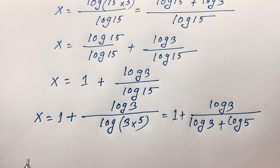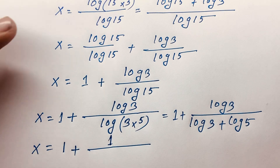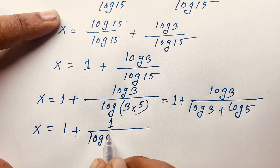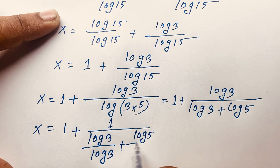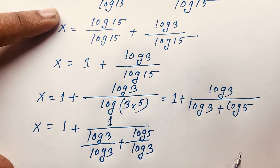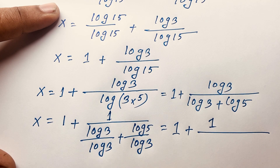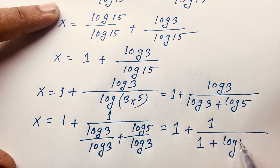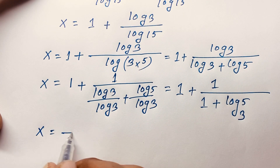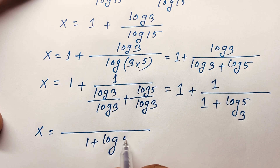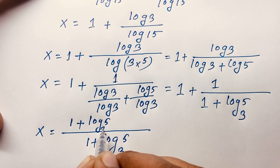So x equals 1 plus 1 over (log 3 over log 3 plus log 5 over log 3), which simplifies to 1 plus 1 over (1 plus log 5 base 3). Taking the least common value, x equals 1 plus 1 over (1 plus log 5 base 3).